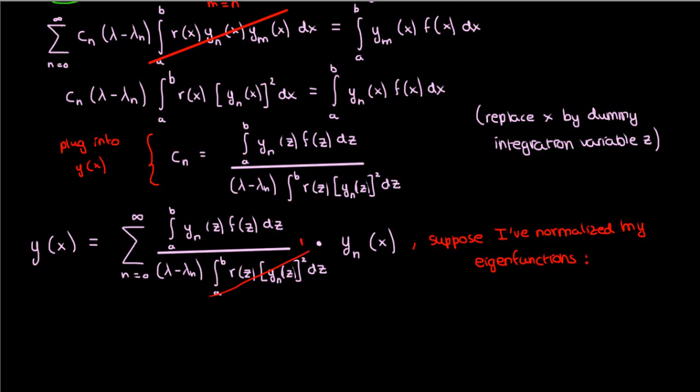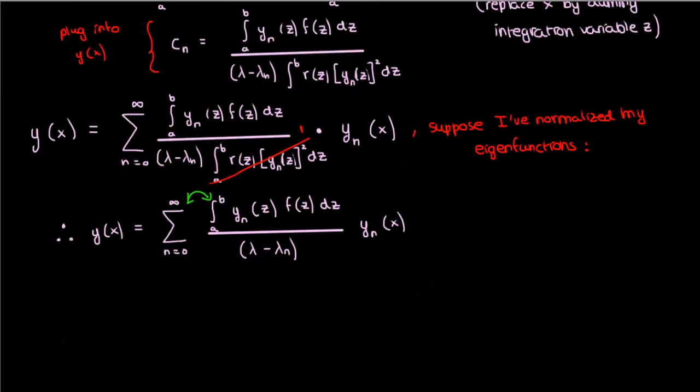Normalizing the eigenfunctions, by the way, isn't too difficult. All we do is multiply by a constant. So if our eigenfunctions are normalized, this is what we'll end up with for y. Let's switch the integral with the summation, again because integration is a linear operator, and here's what we end up with.